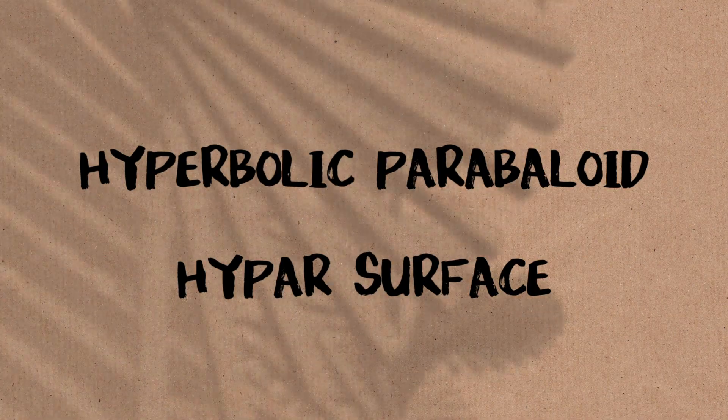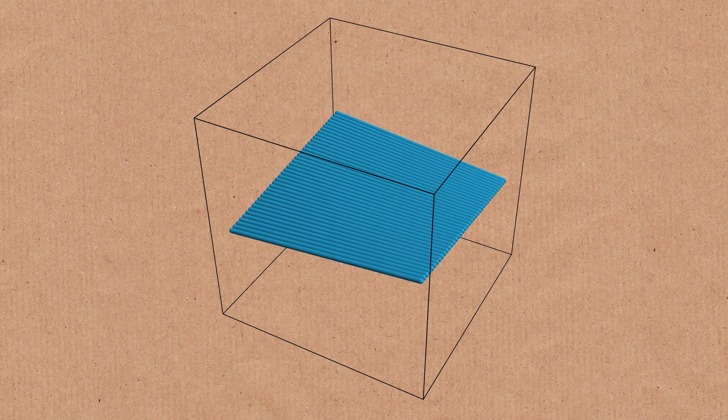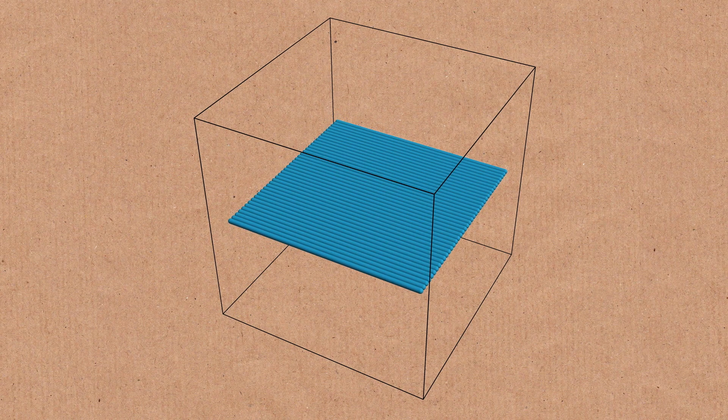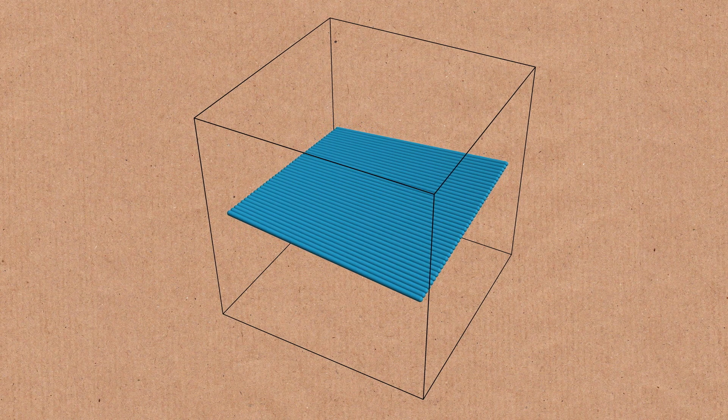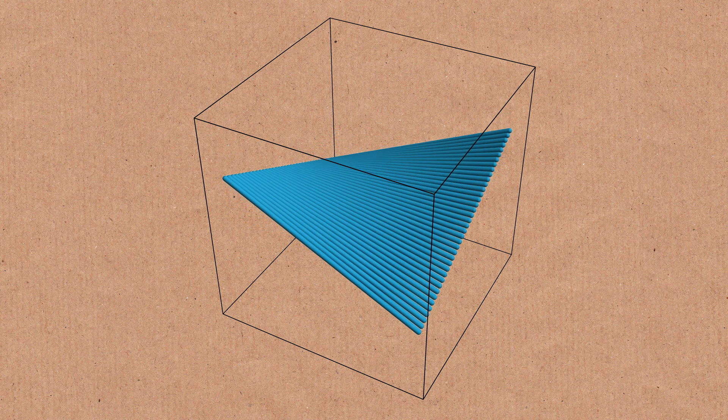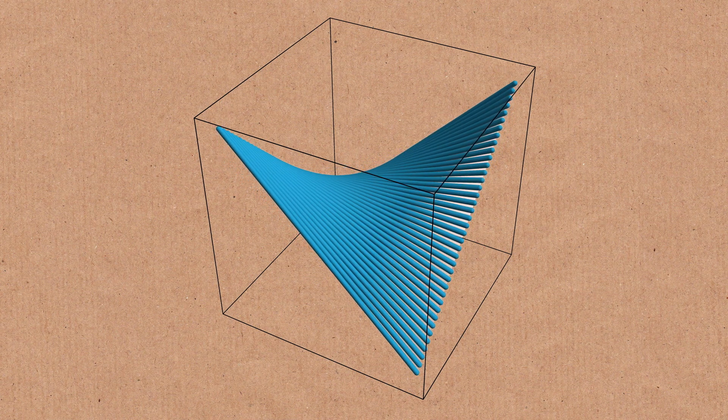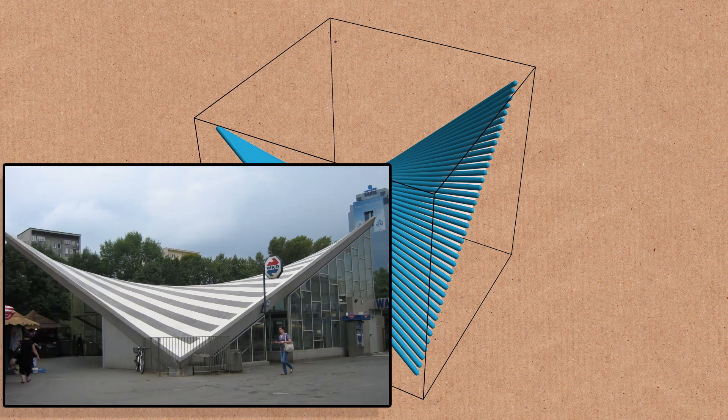This is the hyperbolic paraboloid, also called a hypar surface. I'm going to basically twist up the ends of these and so this is my parameter here I call height. So as I stretch it I end up with this surface here. This is something you see in architecture a lot, this is in a lot of roofs.